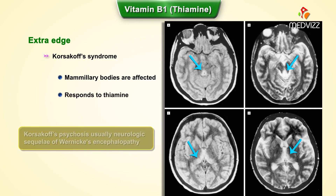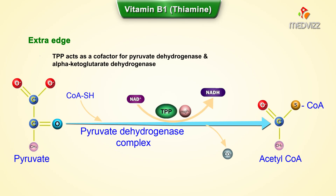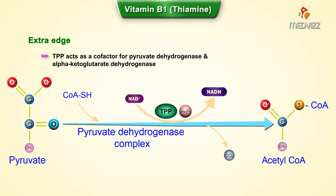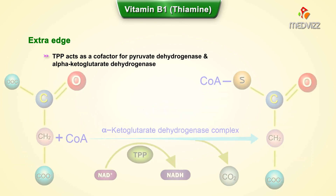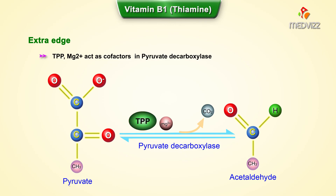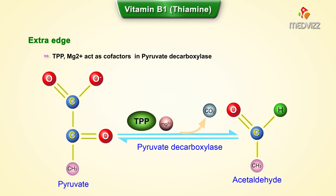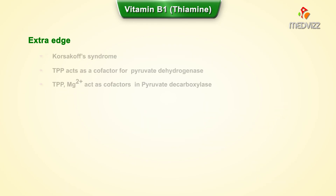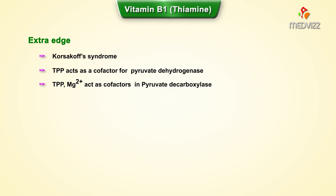Key points to remember: in Korsakoff syndrome, the mammillary bodies are affected. Wernicke's encephalopathy responds to thiamine, but Korsakoff psychosis — which is usually a neurological sequela of Wernicke's encephalopathy — does not. TPP (thiamine pyrophosphate) acts as a cofactor for pyruvate dehydrogenase and alpha-ketoglutarate dehydrogenase. TPP along with magnesium ions acts as a cofactor for pyruvate decarboxylase.